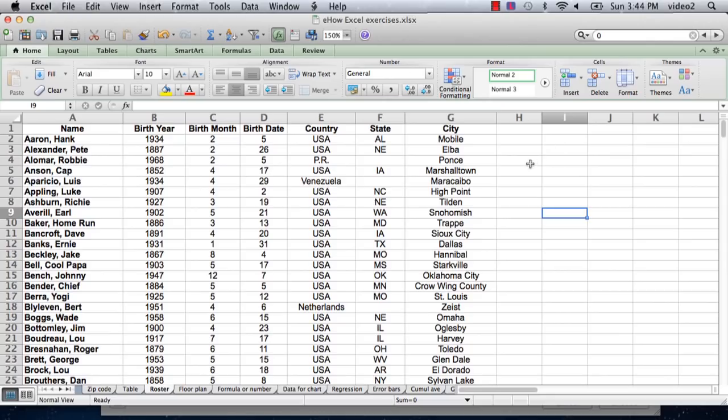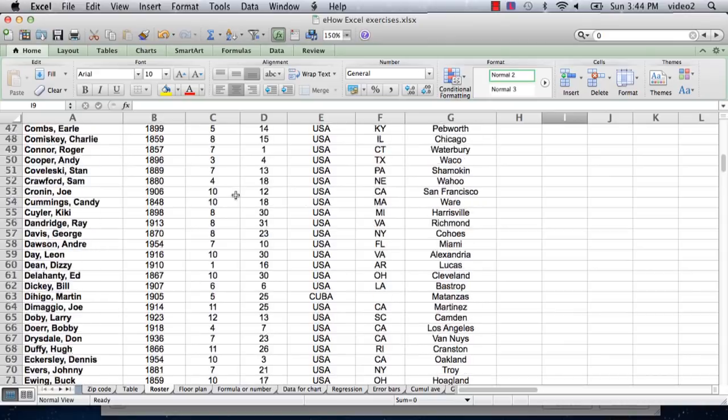So I have a spreadsheet here that I've prepared. It happens to be the roster of the Baseball Hall of Fame, and the first row has the heading of each column: the name, the birth year, the birth month, etc. And then the information is entered in all the way down to the end.